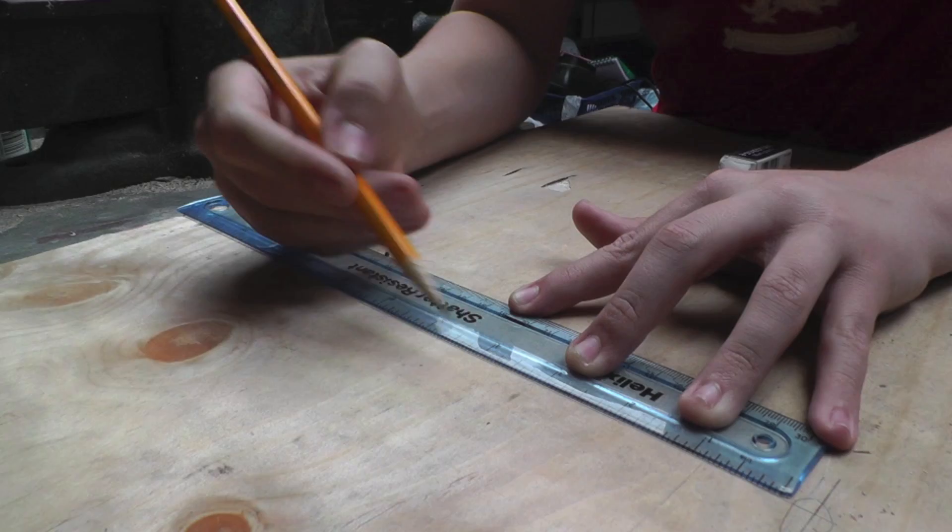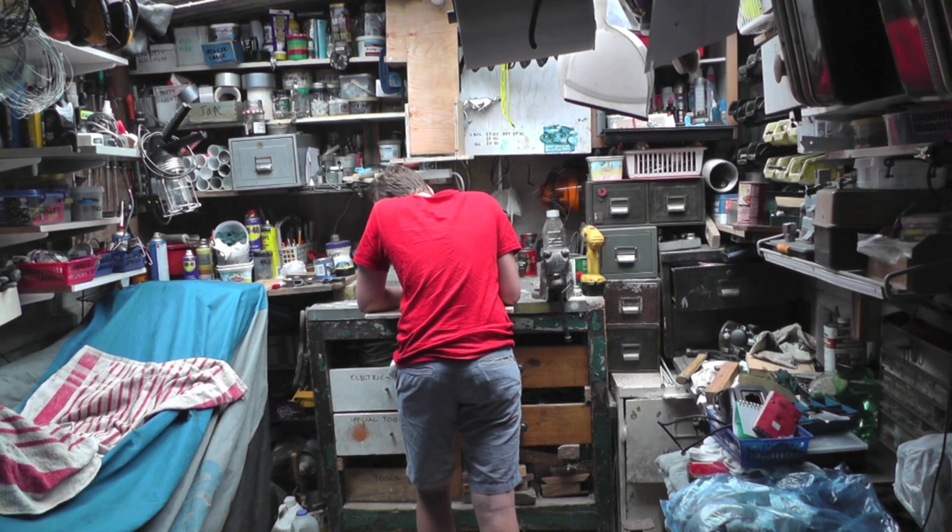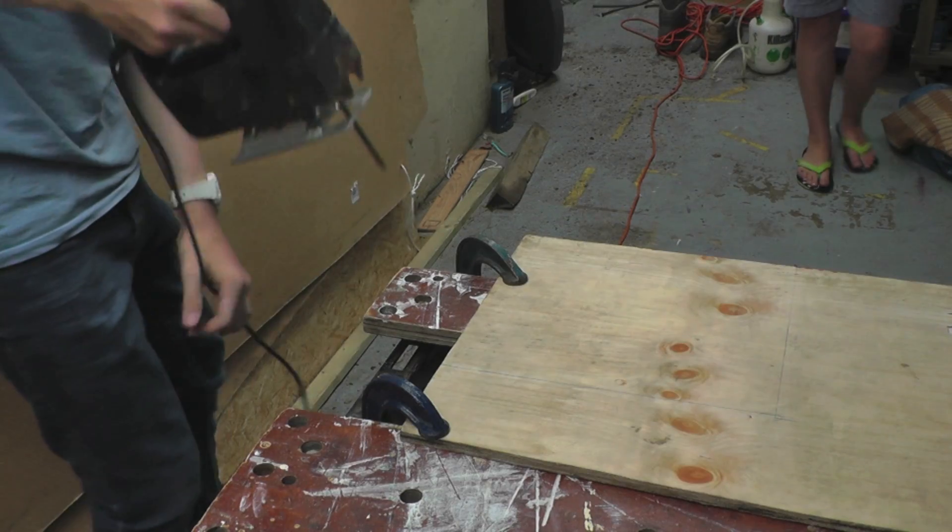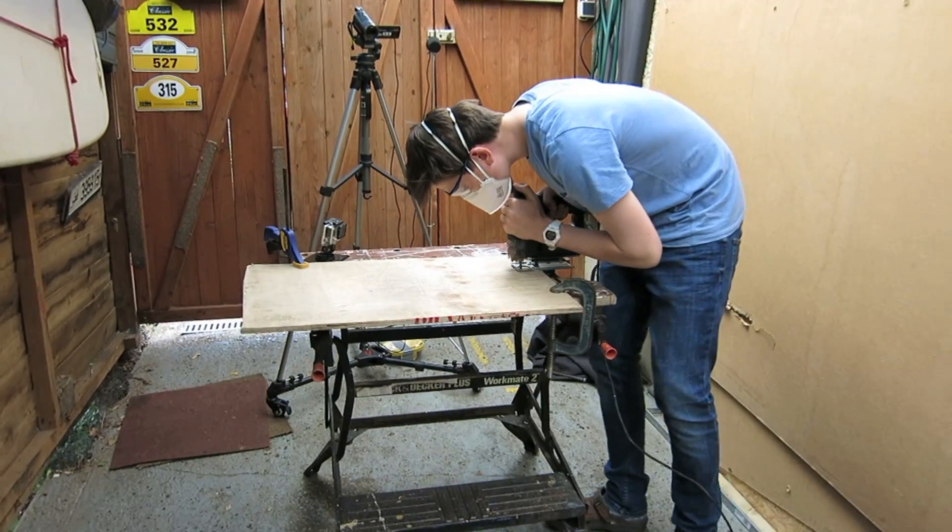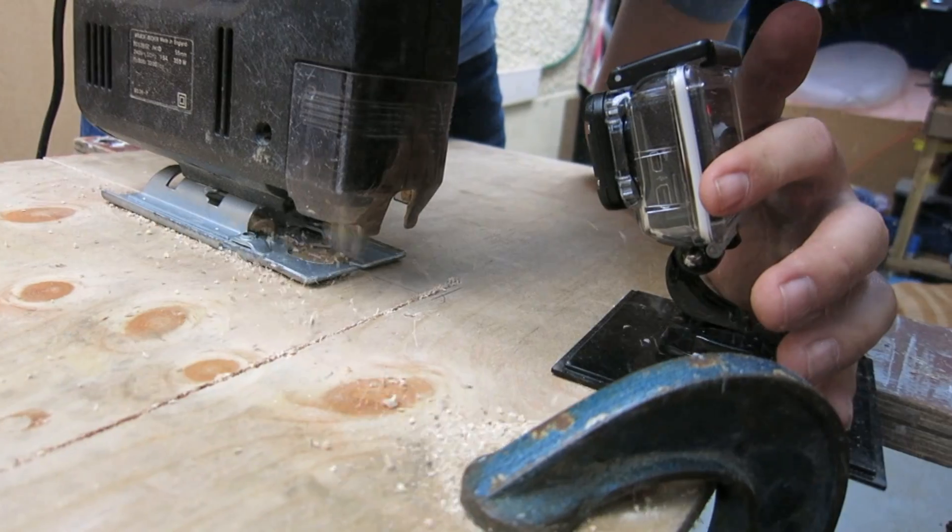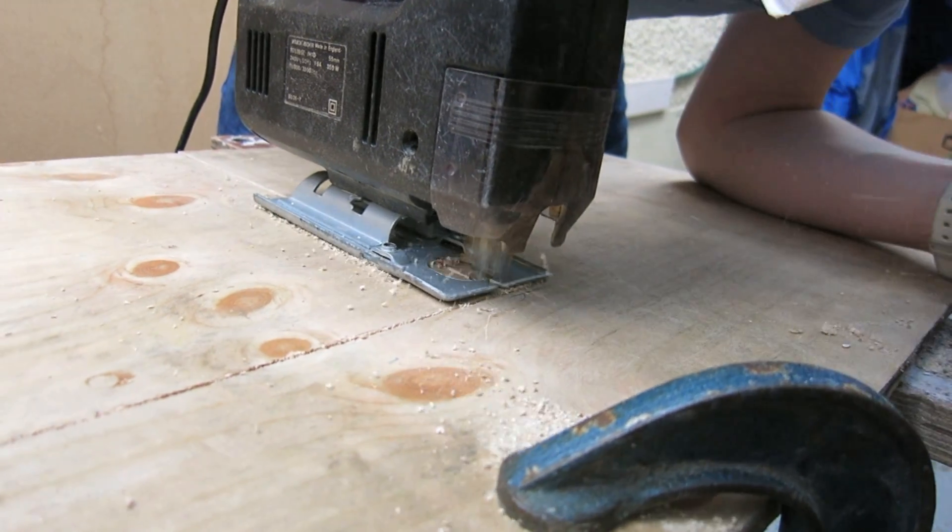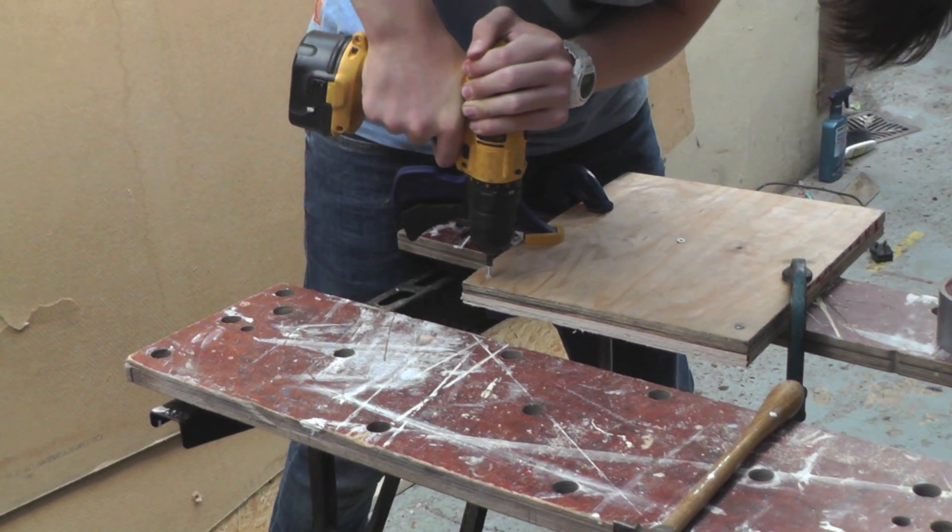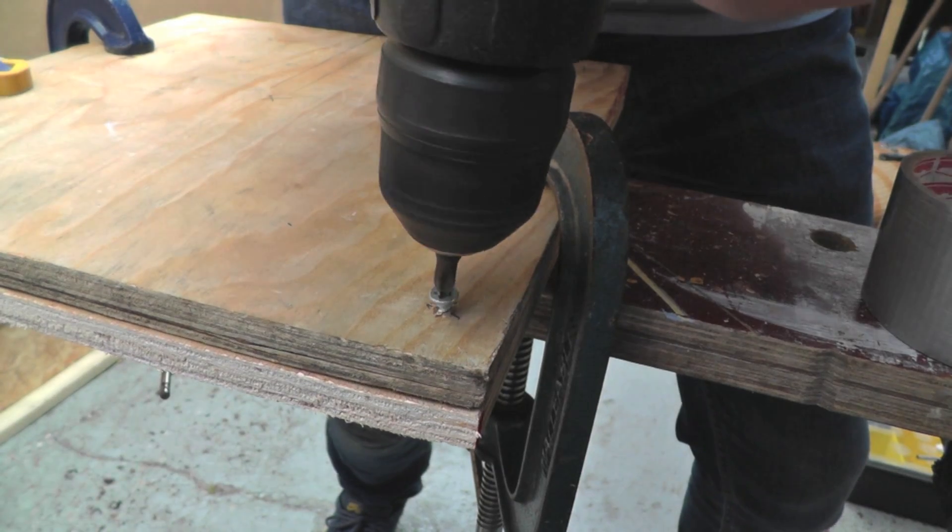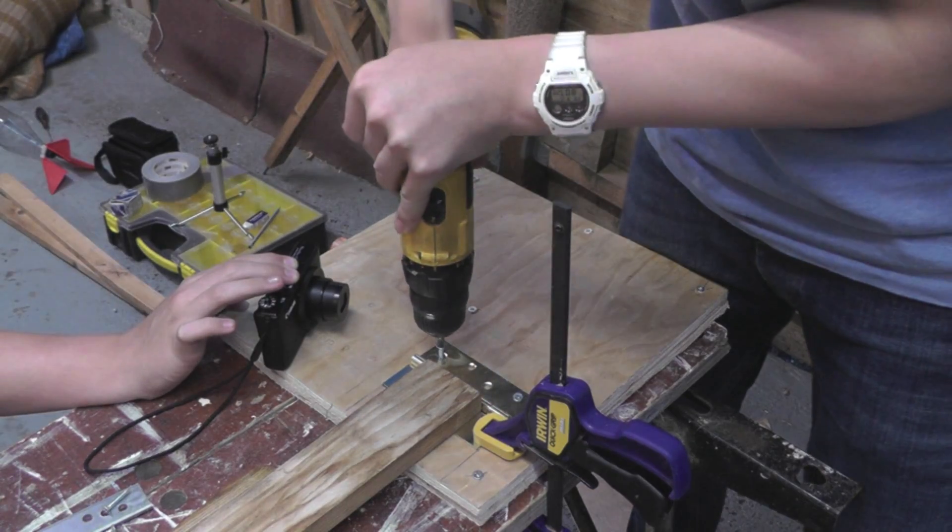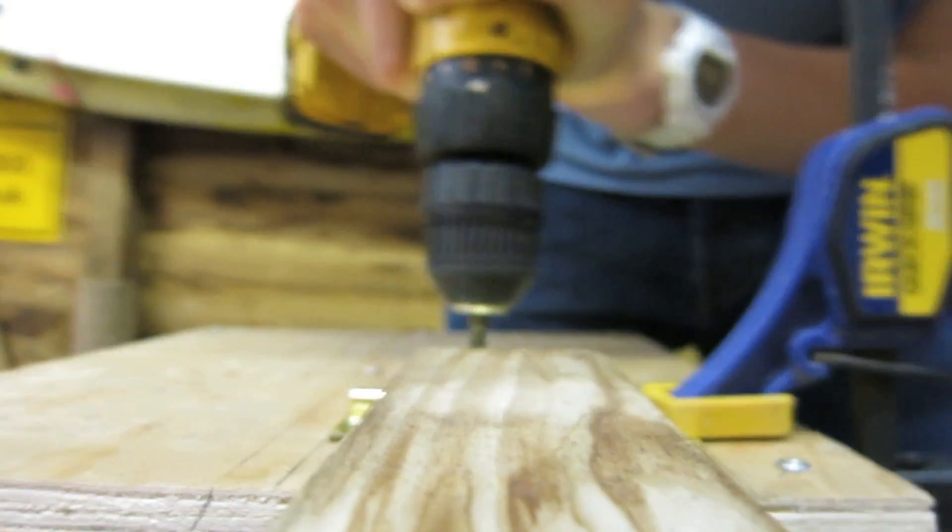Using a try square and a ruler, we marked out a large square for the base. We used the drill to screw the two bases together, then attached hinges onto the legs and then onto the base.